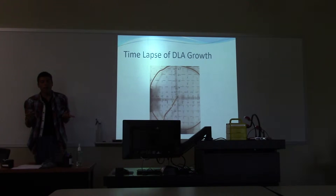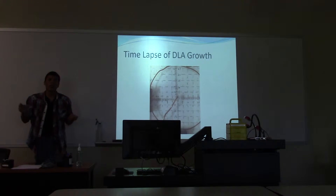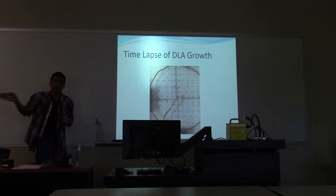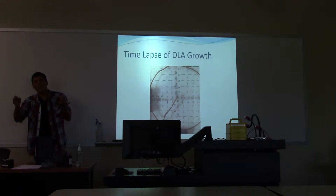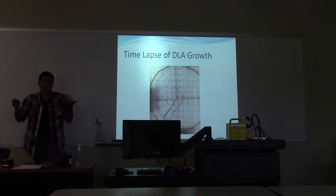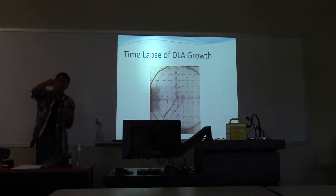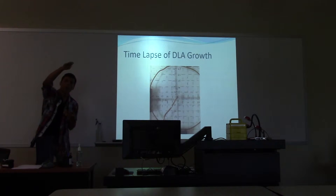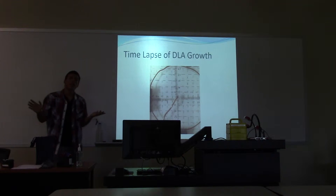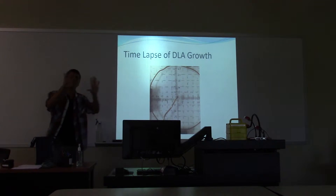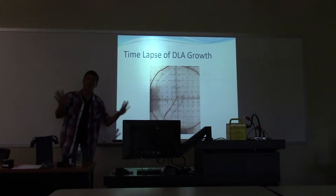Think about the random motion — it's like flipping a coin. You can go up, to the right, or down. Only one direction out of many actually gets you towards the center, so it doesn't fill up, and that's why you get that cool branching structure.